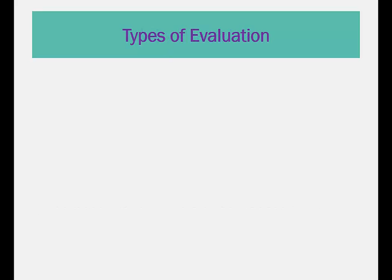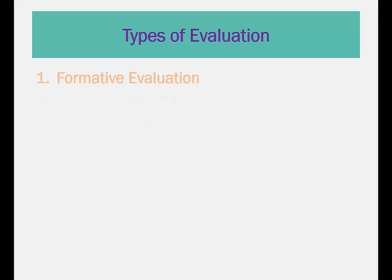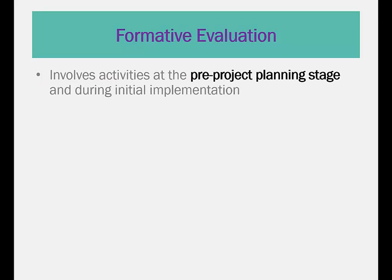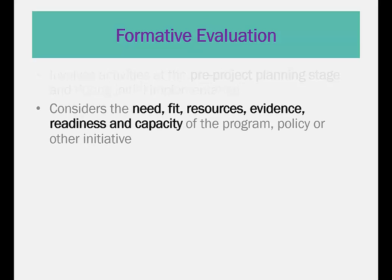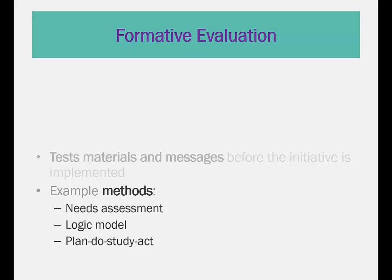There are three main types of evaluation: formative evaluation, process evaluation, and outcome evaluation. Formative evaluation involves activities at the pre-project planning stage and during the initial implementation phase. This type of evaluation considers the need, fit, resources, evidence, readiness, and capacity of the program, policy, or other initiative. Formative evaluation may test material and messages before the initiative is implemented.